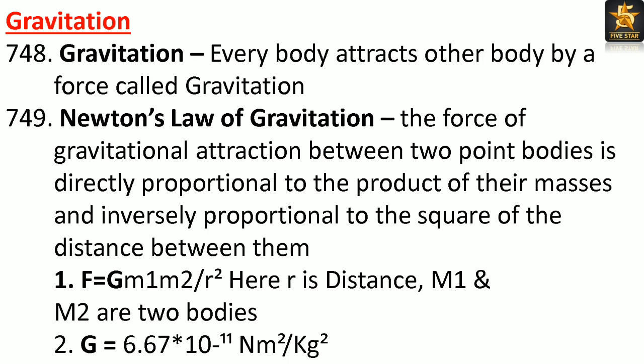Gravitation: Every body attracts another body by a force called gravitation. Newton's law of gravitation: The force of gravitational attraction between two point bodies is directly proportional to the product of their masses and inversely proportional to the square of the distance between them. F = G·m1·m2 / r². G equals 6.67 × 10⁻¹¹ N·m² per kg².